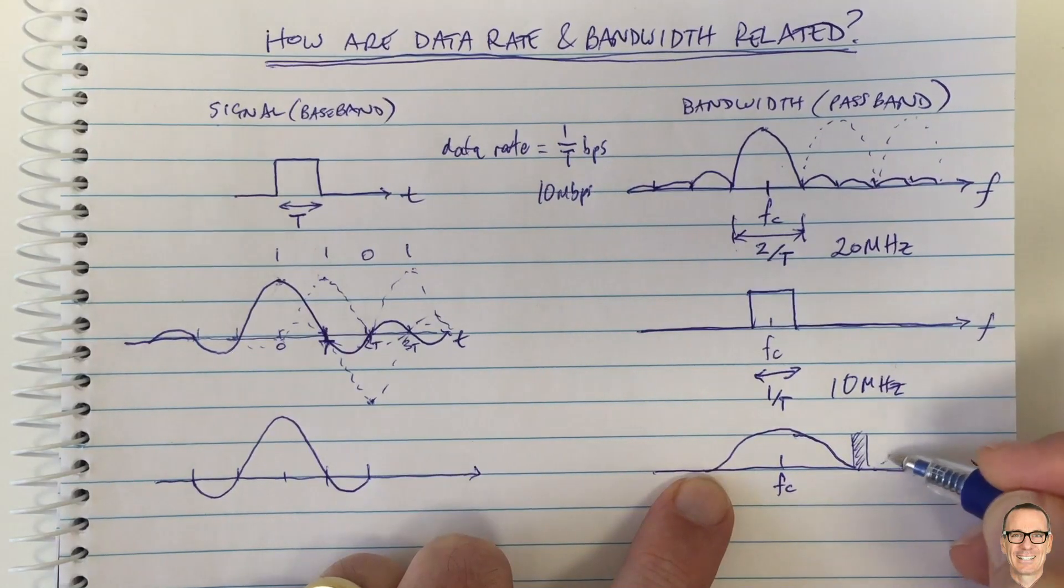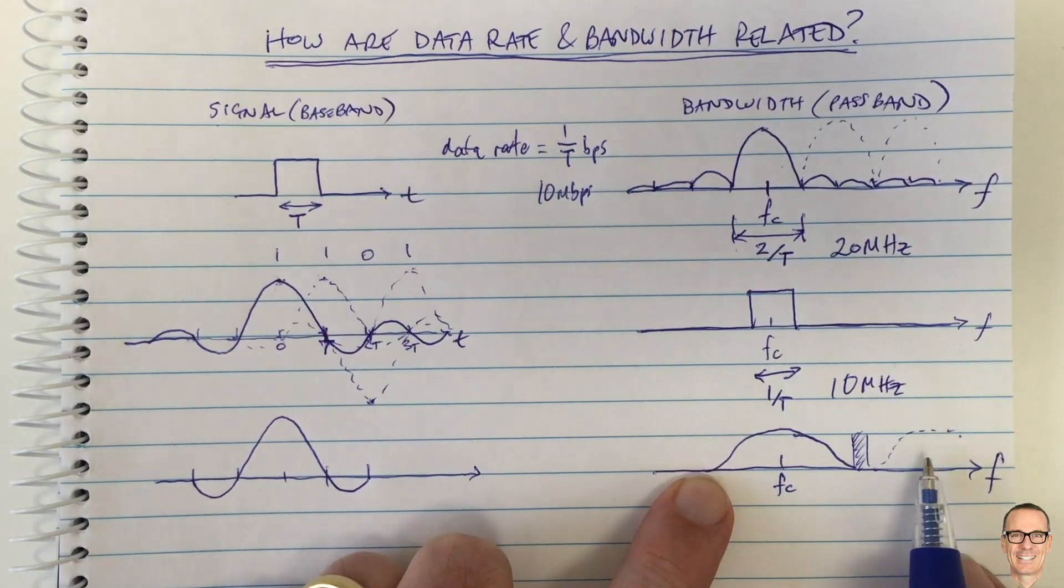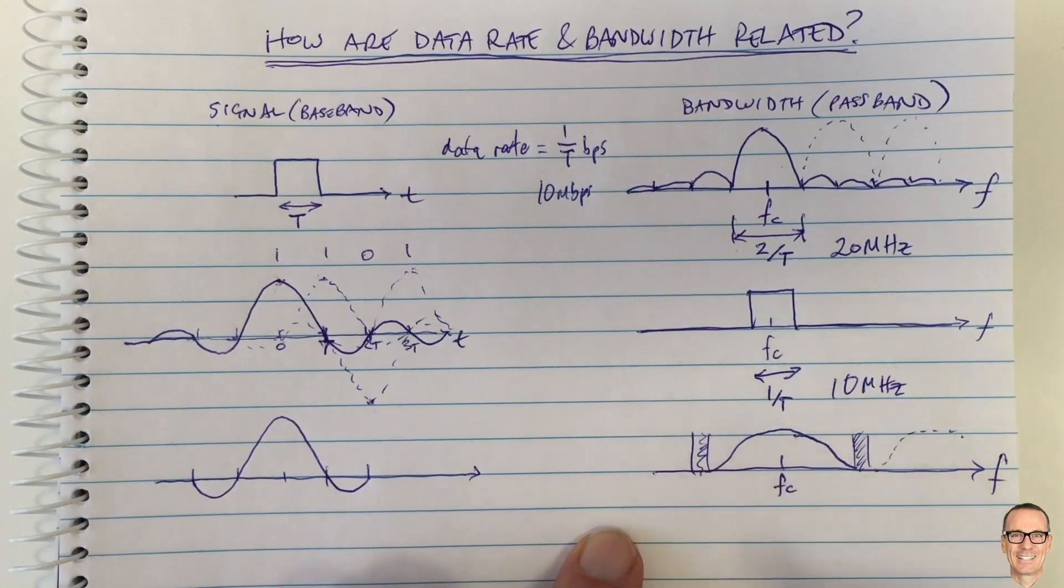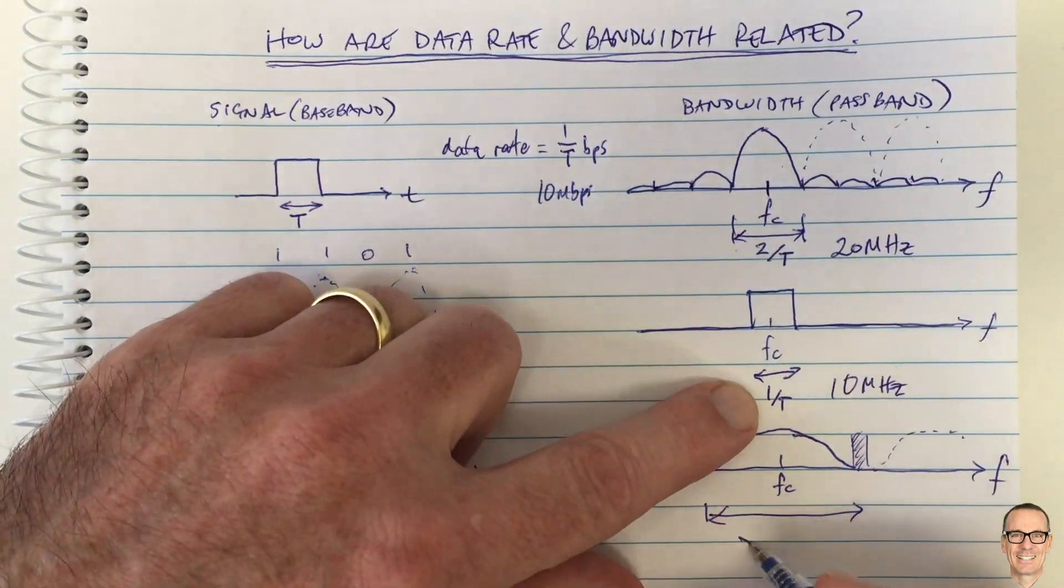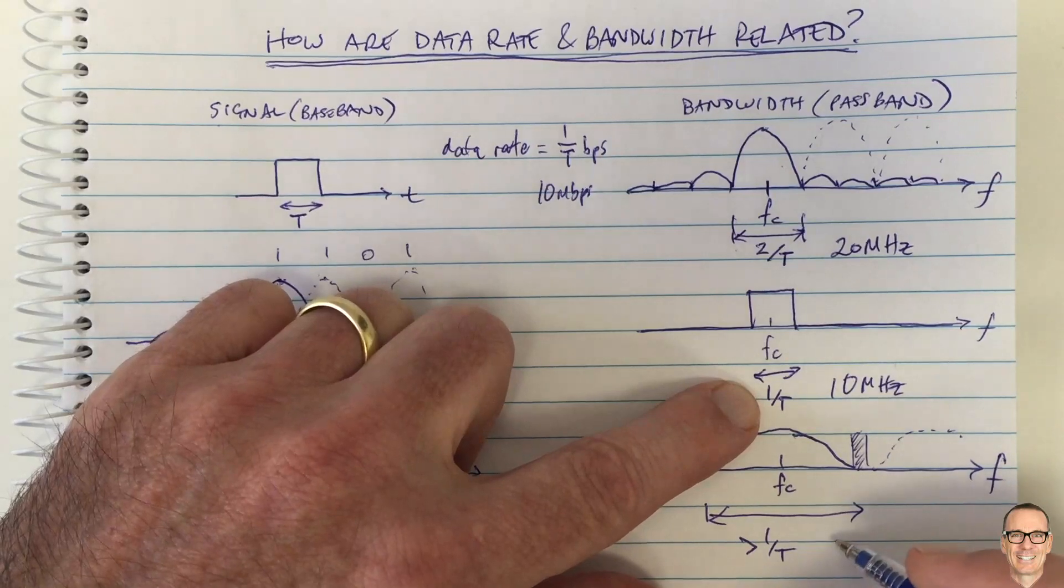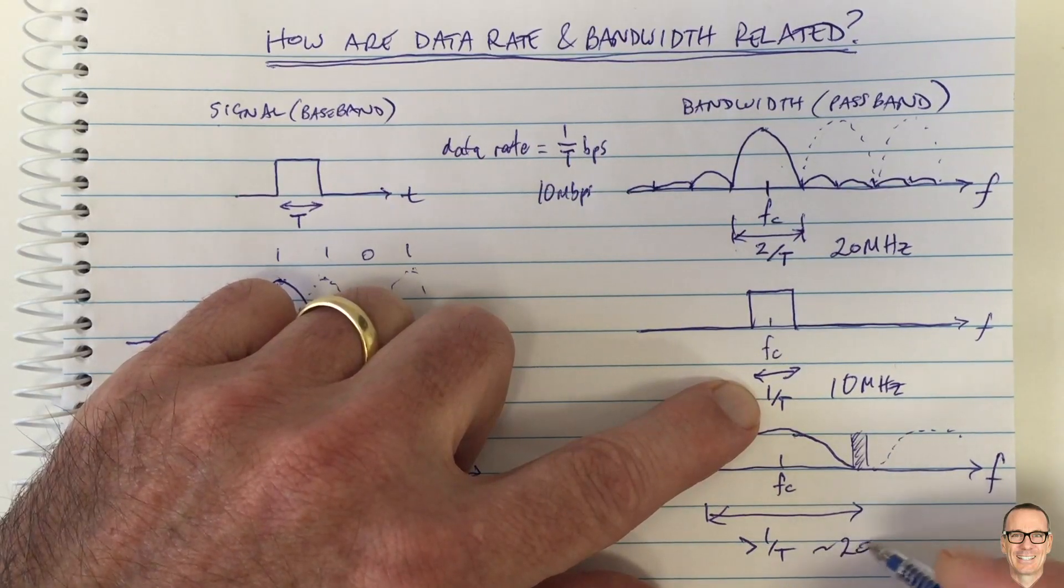Then another guard band here for the next mobile phone. So this bandwidth here then is going to be bigger than 1 on T, and you might pick something like maybe 20 megahertz.